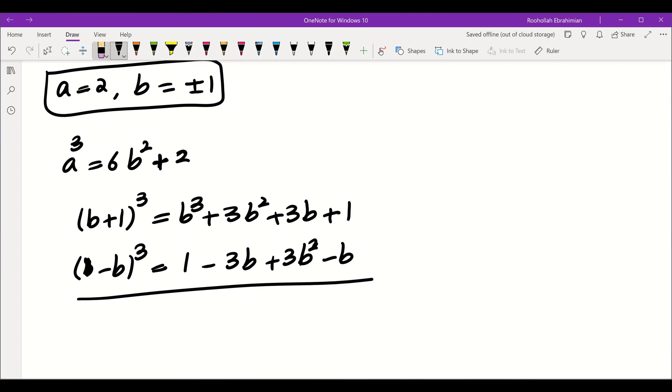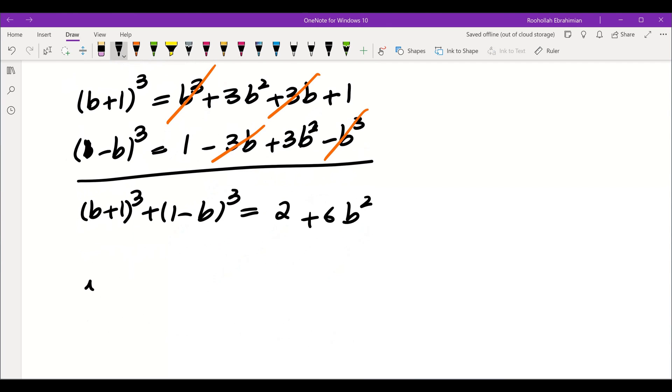So b plus 1 cubed plus 1 minus b cubed is going to be 2, and then we get 6b squared. The b cubed cancel. We have a plus b cubed minus b cubed, and we have a 3b and negative 3b. Those two cancel. So what that means is that we get a cubed equals 1 plus b cubed plus 1 minus b cubed.